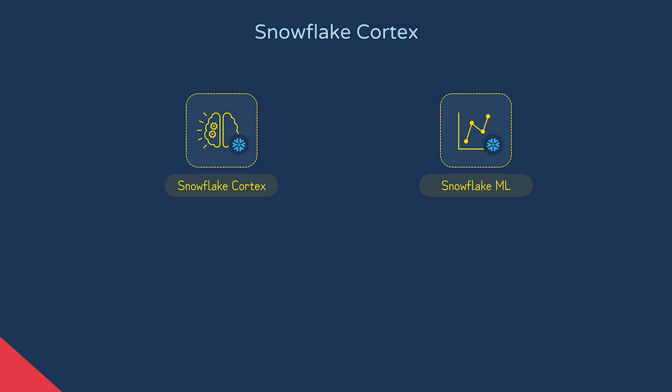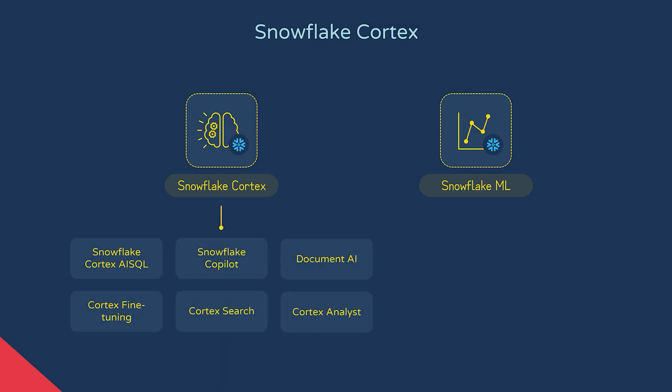Cortex is essentially an umbrella term for the collection of features that use large language models, or LLMs. These are a type of deep learning model that are trained on vast amounts of text — billions or trillions of words — which give them the ability to predict the next word or token of a given sentence.